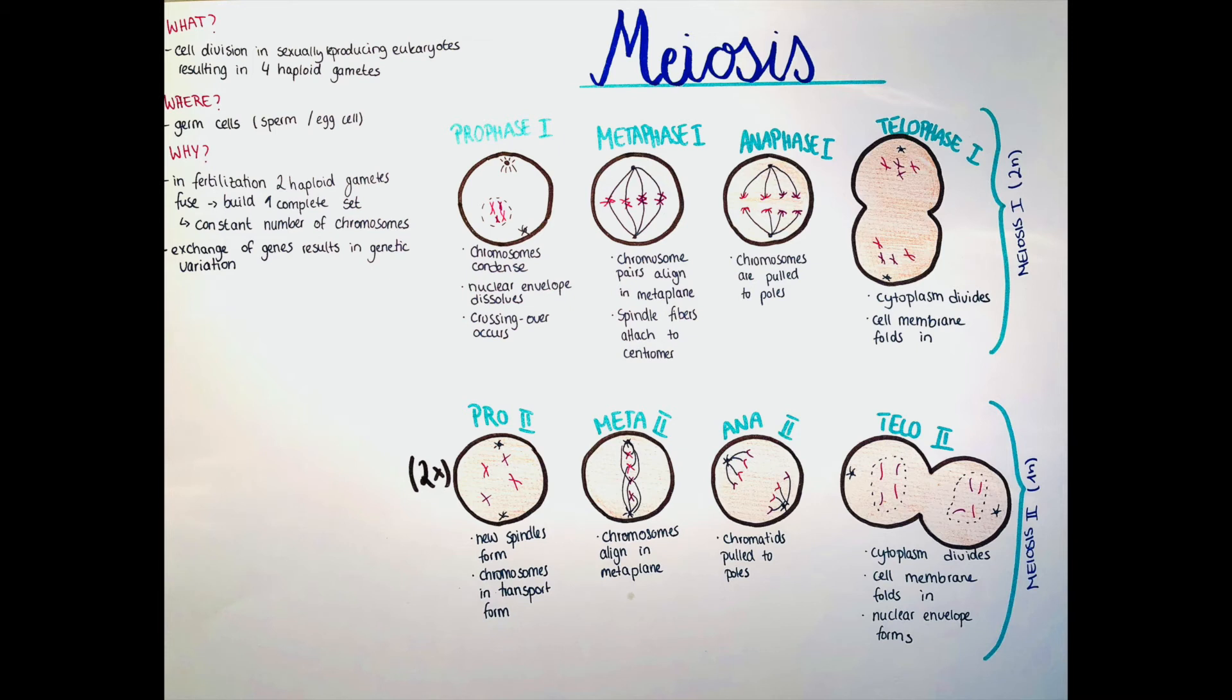And now we created either egg cells or sperm cells which are ready for fertilization and will then fuse with another gamete to form again a diploid set.